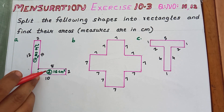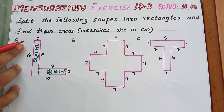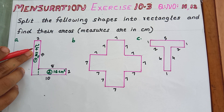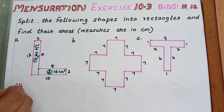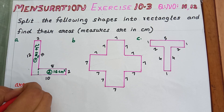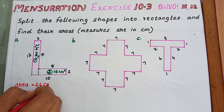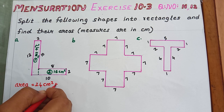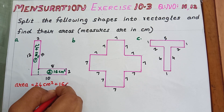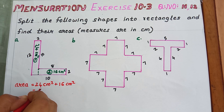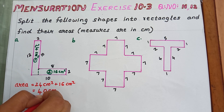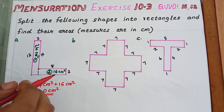Now the area of the whole shape is given by adding the area of the first rectangle and the area of the second rectangle. So area equals 24 cm² plus 16 cm², which equals 40 cm². That is the answer to this question.